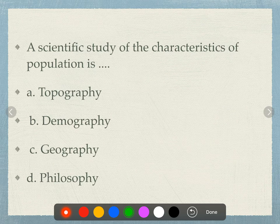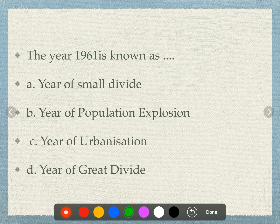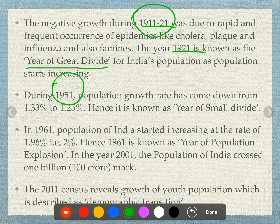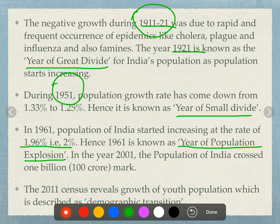The scientific study of the characteristics of population is called demography. The year 1961 is known as the year of population explosion. In 1951, population growth was more than 1.33%, and in 1961 it rose to more than 1.96%.